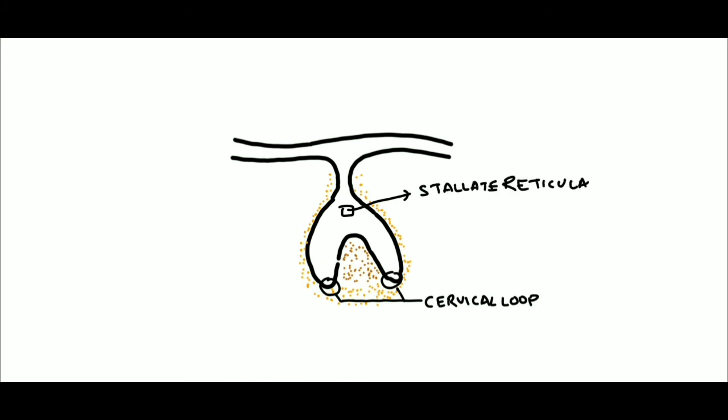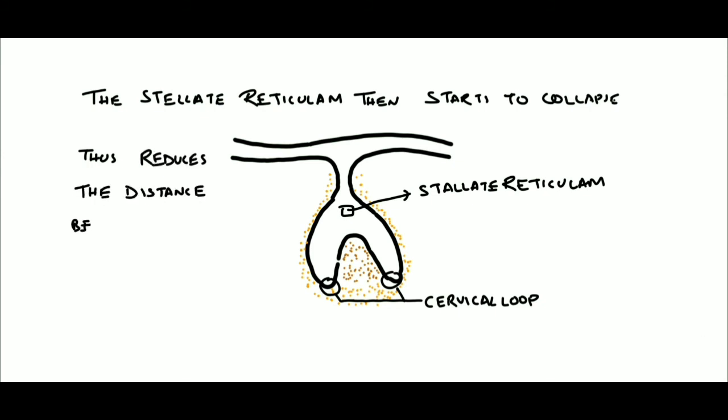Next, the stellate reticulum starts to collapse, thus reducing the distance between the inner enamel epithelium and outer enamel epithelium.